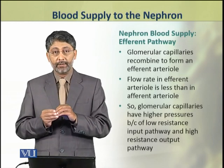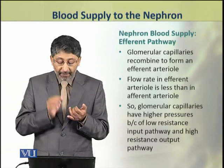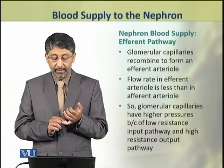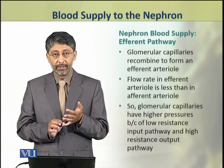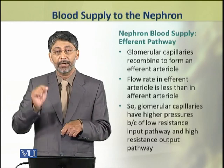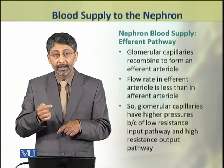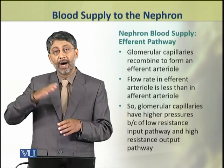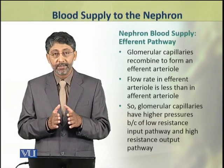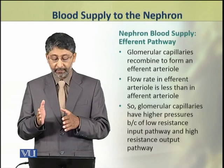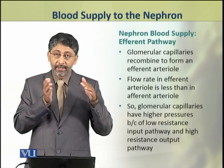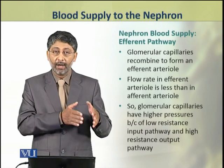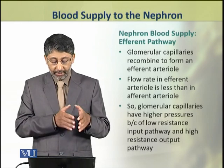The flow rate in the afferent and efferent arterioles is different, such that in the efferent arterioles there is less flow rate as compared to the afferent arterioles. Glomerular capillaries therefore have higher pressure because of a low-resistance input pathway and a high-resistance output pathway of the efferent arterioles.